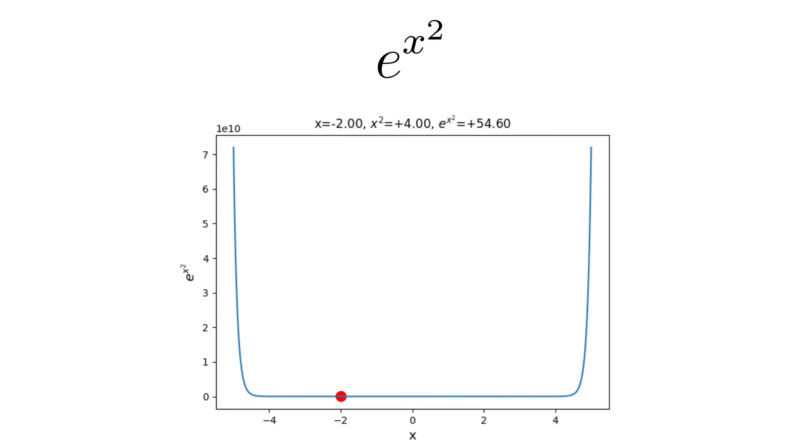Another thing that we can do that brings us closer to the definition of the normal distribution is to compute the square of the input value. This operation attains two things. One, it makes the function symmetric with respect to the y-axis, and two, the output of the function is exploding even faster.